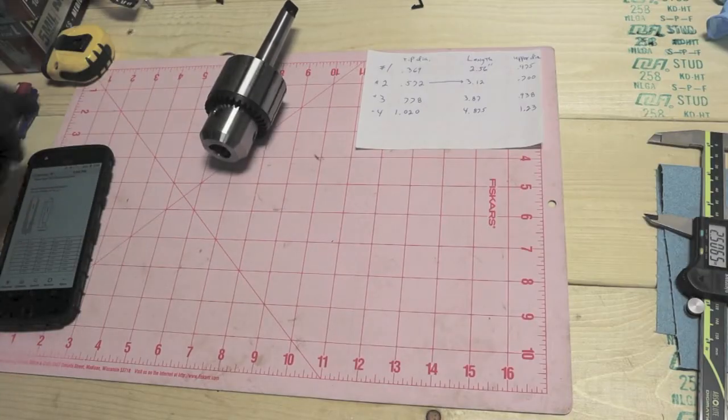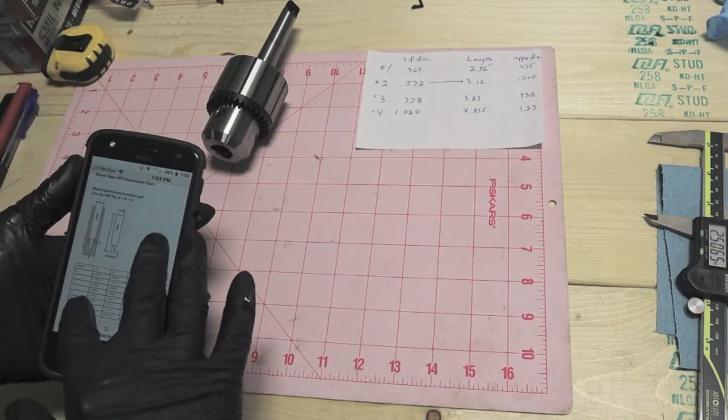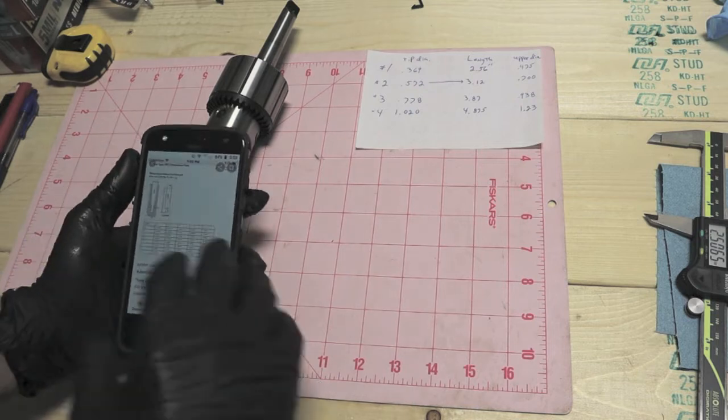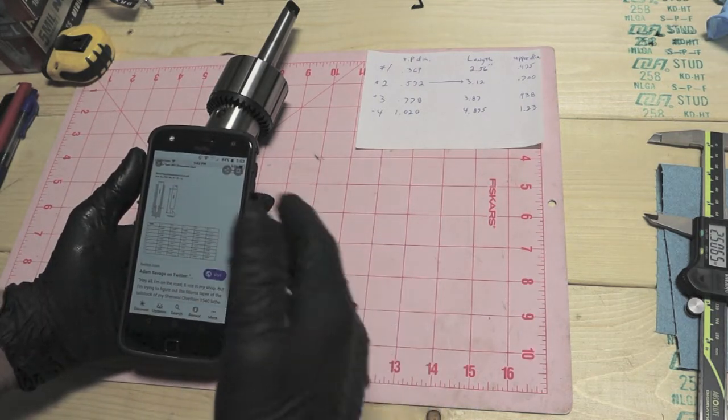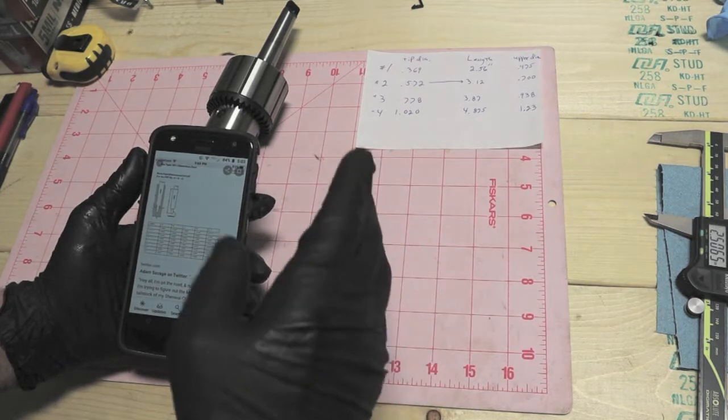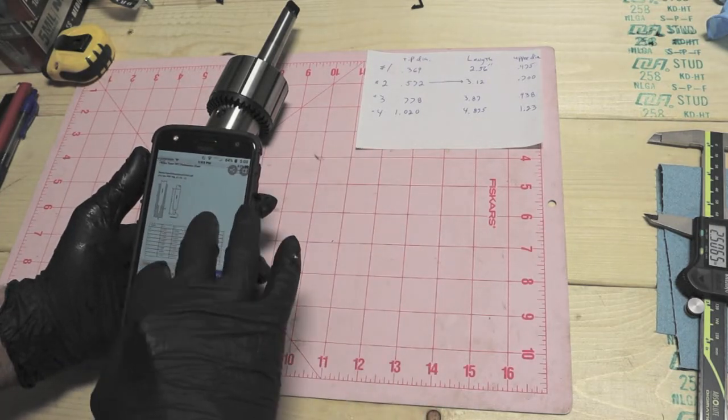After you get your Morse Taper out you can get online and there's all kinds of charts. All kinds of information if you just Google Morse Tapers. You can even find charts on your Jacobs Taper, the Brown and Sharp Tapers. This is just an example of one.